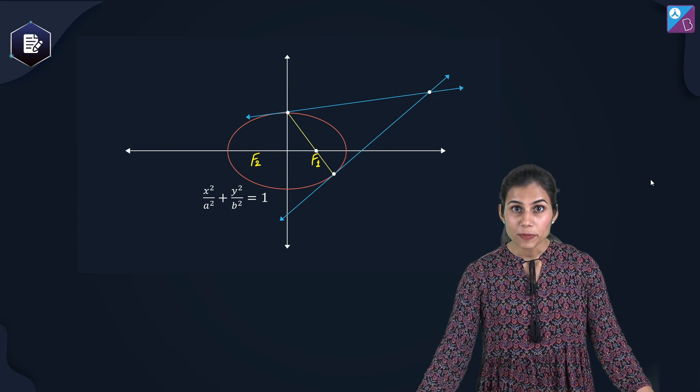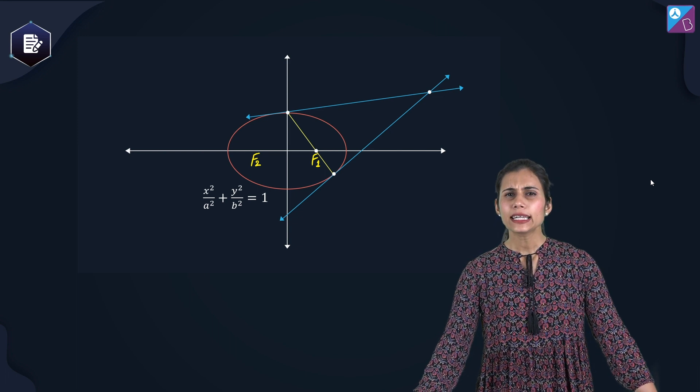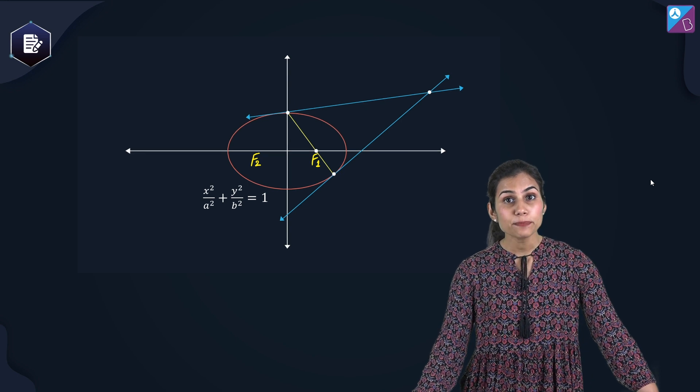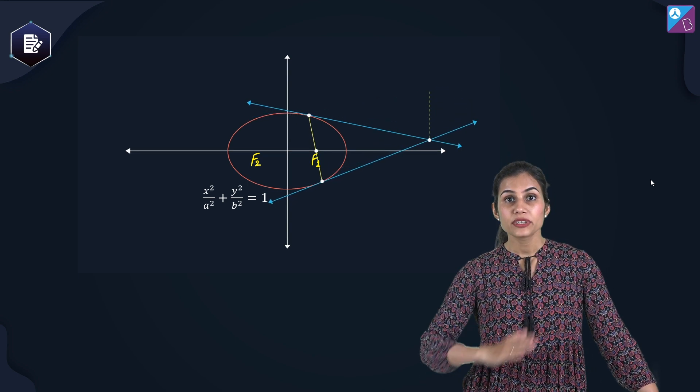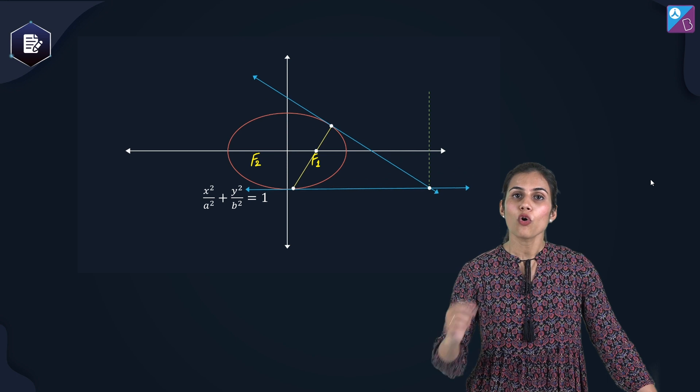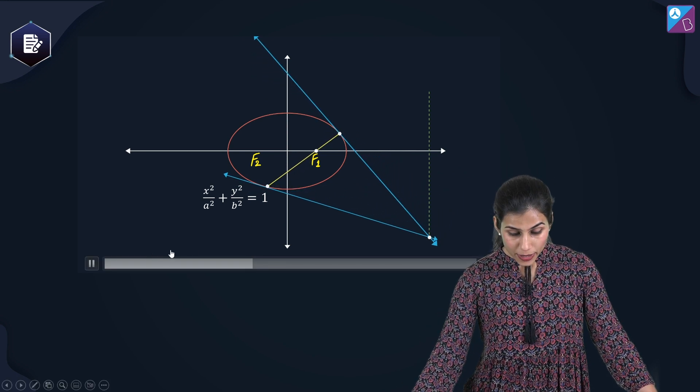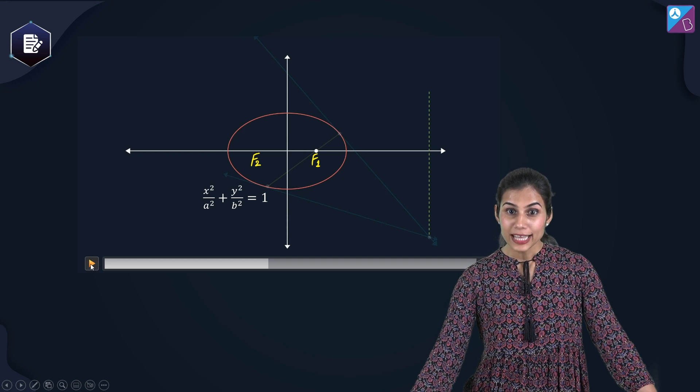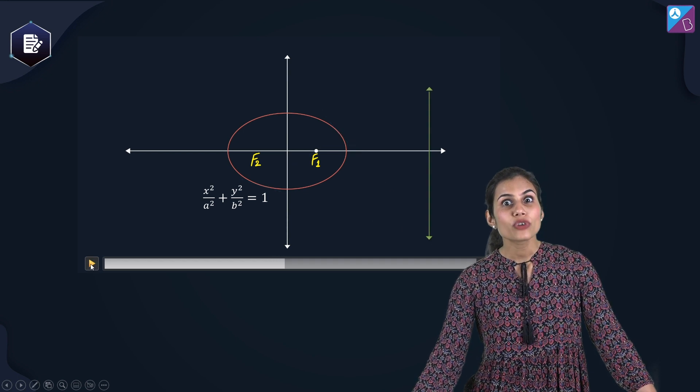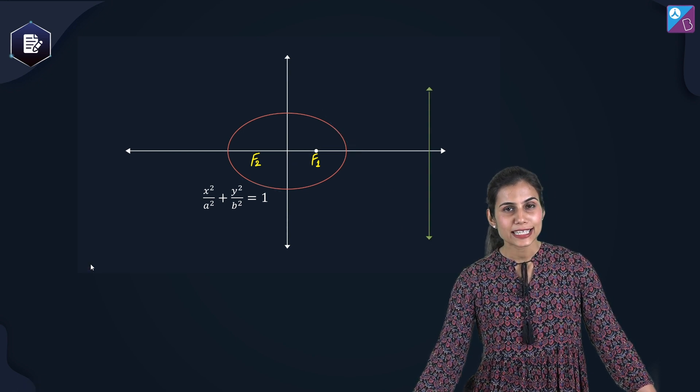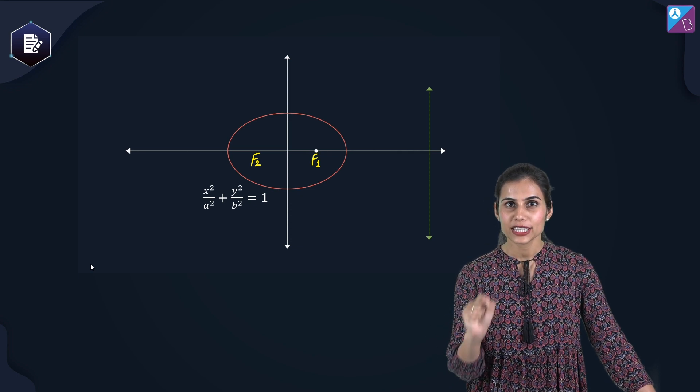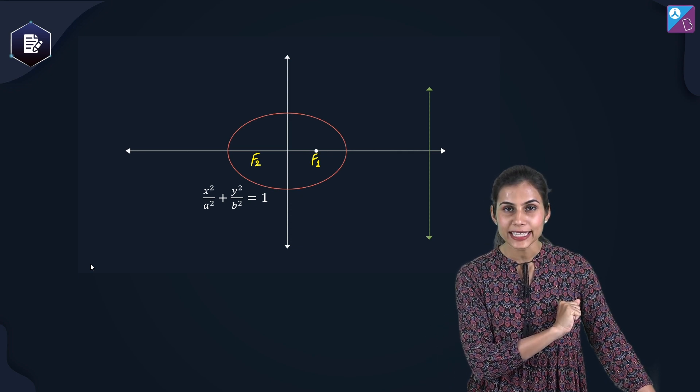Starting with all the focal chords passing through F1, you can clearly visualize that as I keep changing my focal chord, the respective points of intersection of the pair of tangents also change. And as a result, the curve traced by them comes out to be a straight line perpendicular to the x axis which is nothing but my first directrix x equals plus a by e.